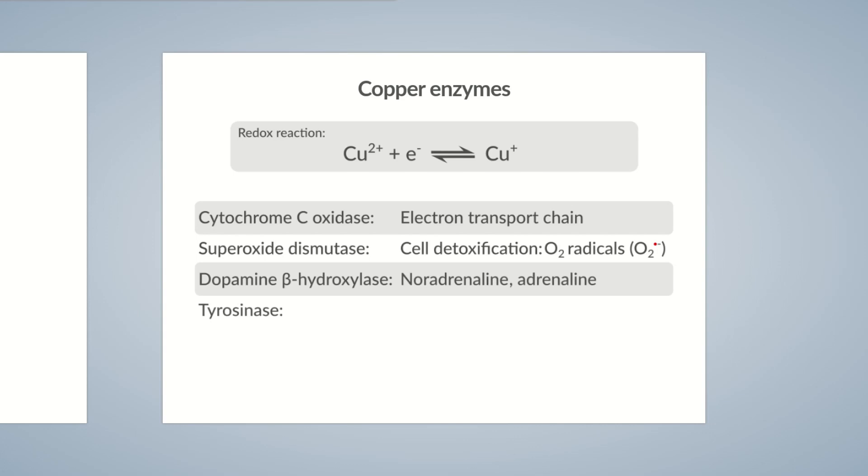Tyrosinase catalyzes the production of melanin, the pigment responsible for the color of skin. Lysyl oxidase is a key enzyme involved in cross-linking collagen.